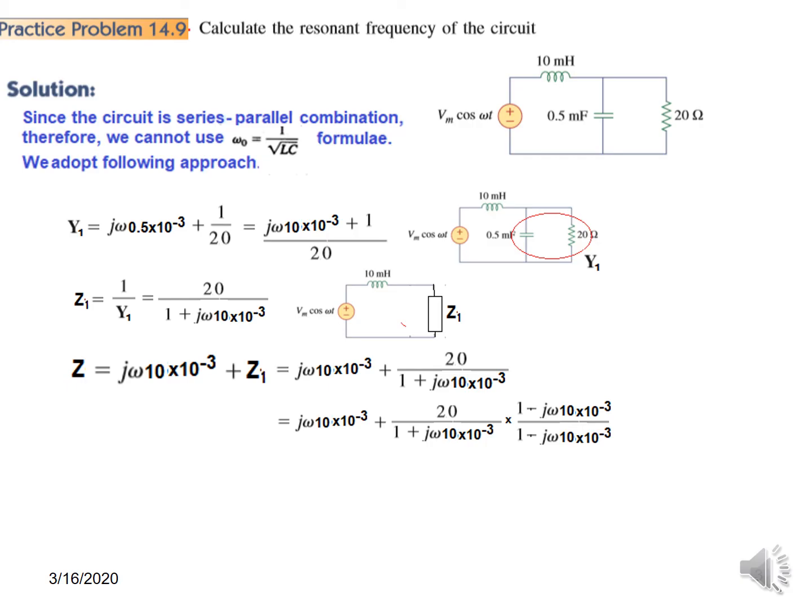Then, as we did in the previous case, we want to get rid of j from here, so we multiply numerator and denominator by 1 minus this term.